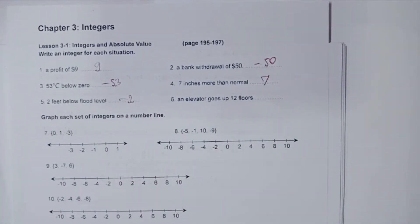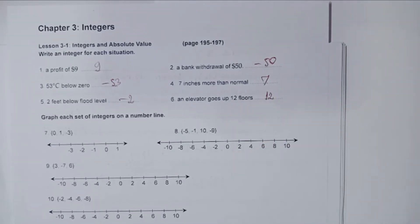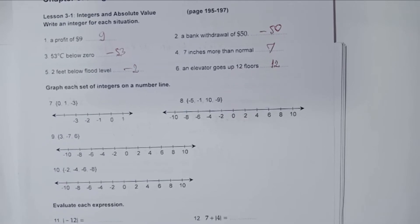And then an elevator goes up twelve floors, so we're going to be twelve. Now graph each set of integers on a number line.